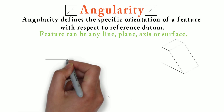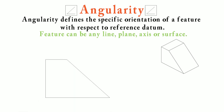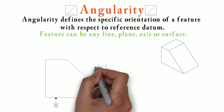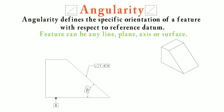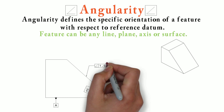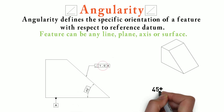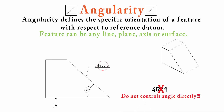Consider a block. Here we have an angle of 45 degrees, and this is datum A. We have to control angularity of this surface with respect to datum A. We will call out the feature control frame with a leader up to the surface which we need to control. Now, many people make the mistake that the value of 1 means 45 degrees plus or minus 1 degree. But that's wrong — always remember, angularity does not control the angle directly.